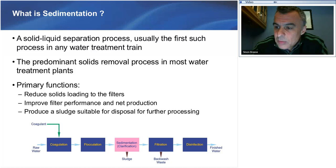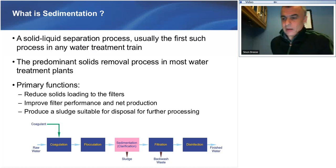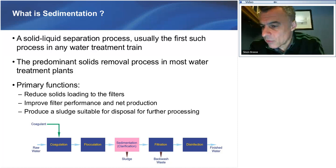Most plants will have a single clarification basin whose main role is to protect the filters from excessive solids loading. Generally, we want to get the turbidity down below 2 NTU to ensure the filters run sustainably without clogging up too quickly. Because your sedimentation process is taking out at least 90% of the solids, often 95% or even 99%, you want to get them out in as concentrated a form as possible and then process them or send them to sewer.